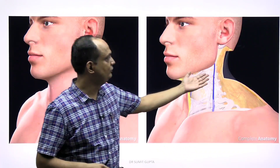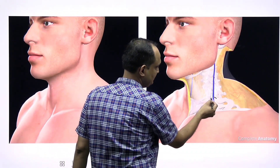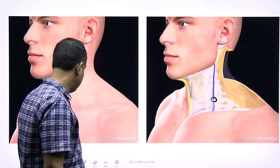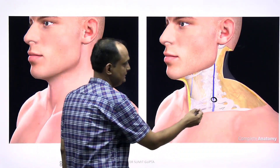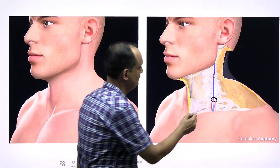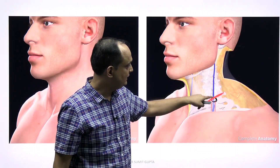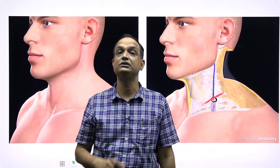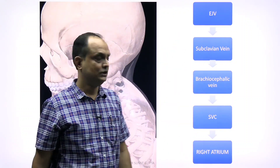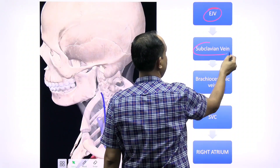After removing the skin, the external jugular vein is present and at this point you can see the vein is piercing the deep fascia of the neck, which is known as the investing layer. After this point, the vein goes deep. When injury occurs at this site, the person has chances of death — so you must understand the venous drainage.